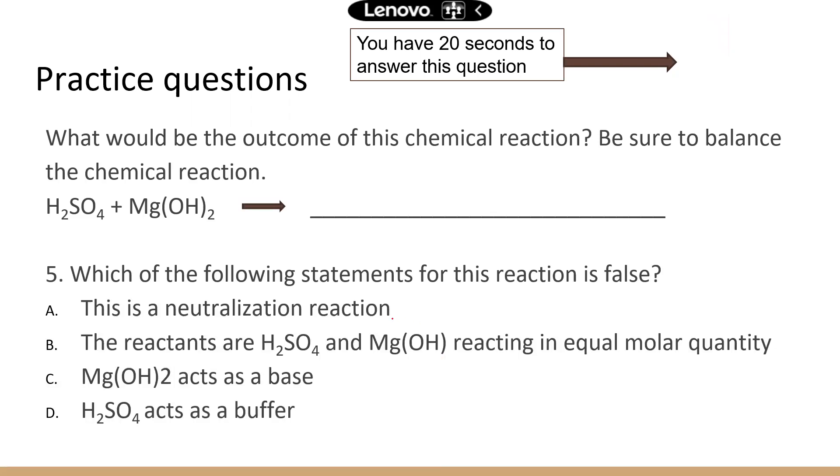Now, which one is false? A is correct. It is a neutralization reaction. B, the reactants are what's on the left side of the chemical reaction. So that's correct. And they are reacting equal molar quantity. They're both, they have the same number in front of them, which is one. But remember in chemical reactions, if it's one, we don't usually write it out. C, magnesium hydroxide acts as a base. That's also correct. And last one, sulfuric acid acts as a buffer. No, it acts as an acid in this neutralization reaction.